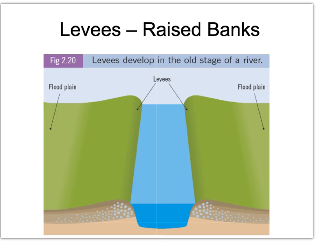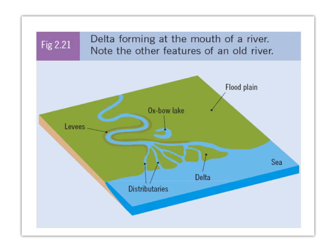Oxbow lake is fine to learn for the old stage, but some of you may want to learn a delta instead. Deltas are formed at the mouth of the river in the old stage. They are a triangular-shaped piece of land that forms right at the mouth — the end point where the river enters the sea or a lake.